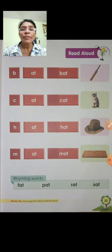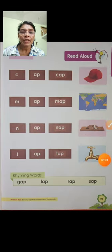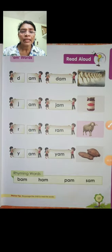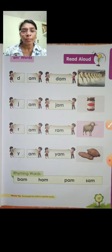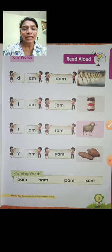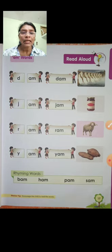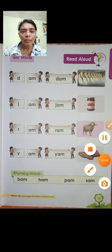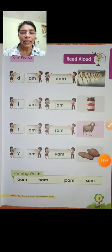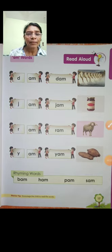Hum kitna learn kiya tha? A-T words, A-P words, A-N words, aur A-M words. It's enough — write each word 1 page, copy mein, next page, homework — 10 times reading, then the lesson will complete. Okay? Learn and learn. Okay? Thank you.